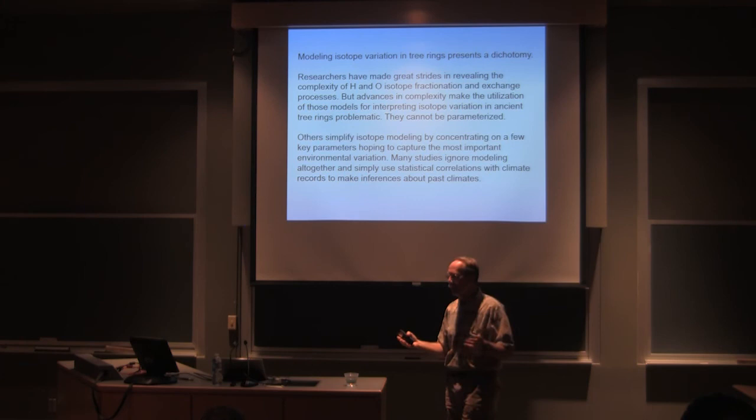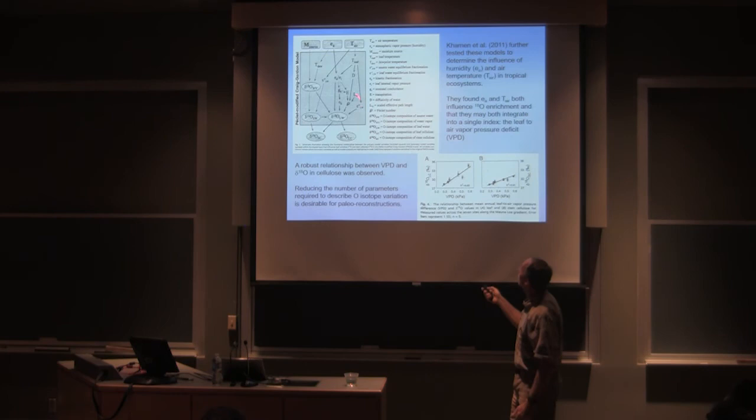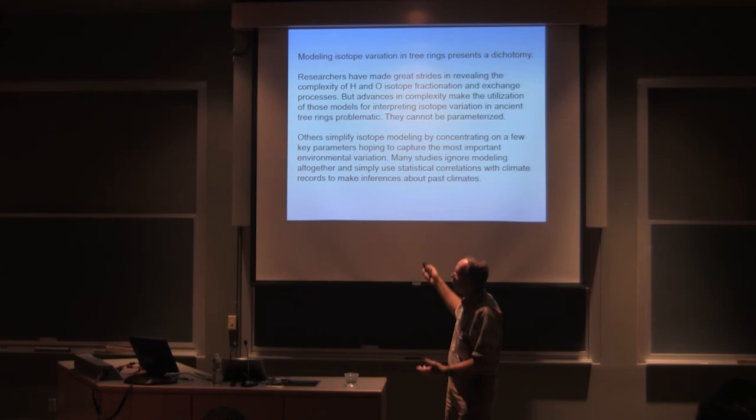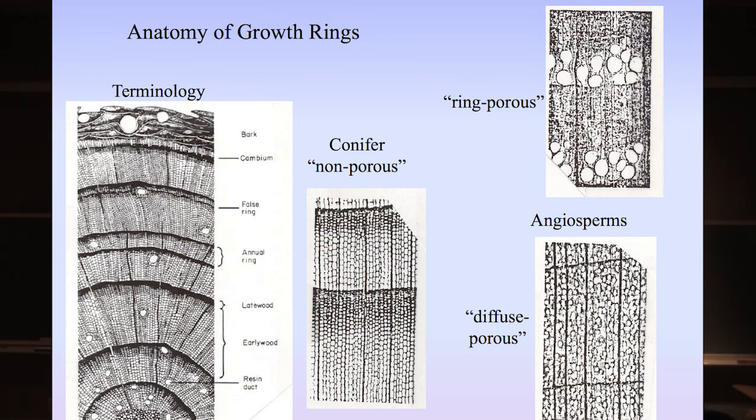Why? Because I can't parameterize it. There's so many variables in their models, and I have to guess on the parameterization. And there's more that I have to guess on the parameterization. This Peclet model requires an estimate of transpiration. What's the transpiration rate of that tree? Well, how do I know what the transpiration rate is a hundred years ago?